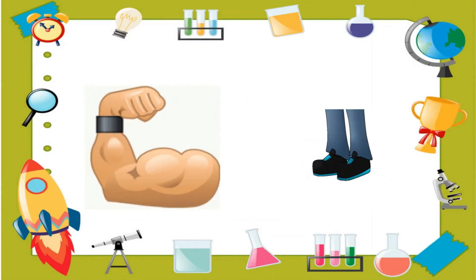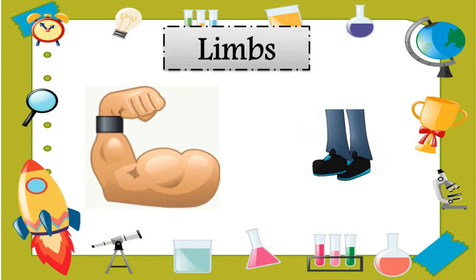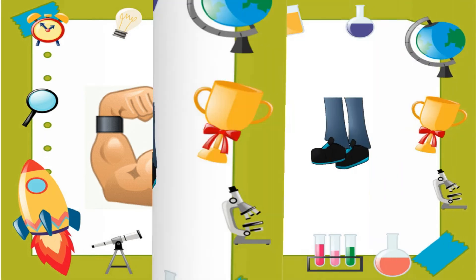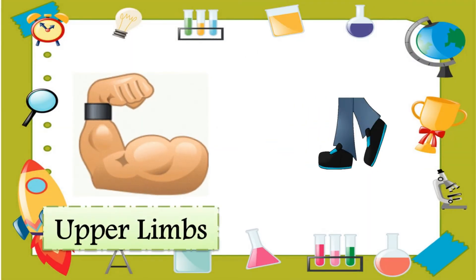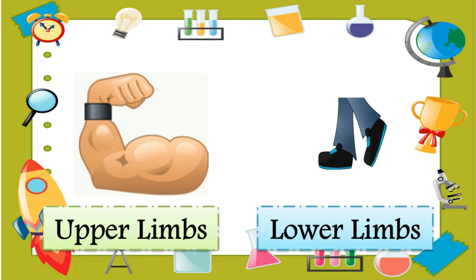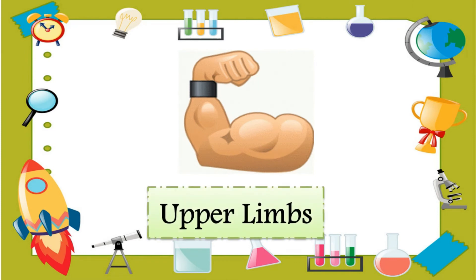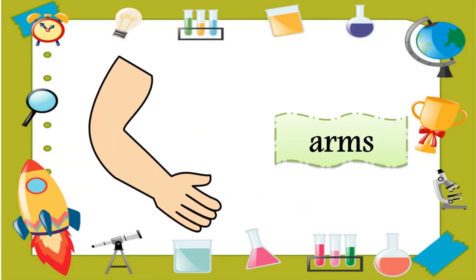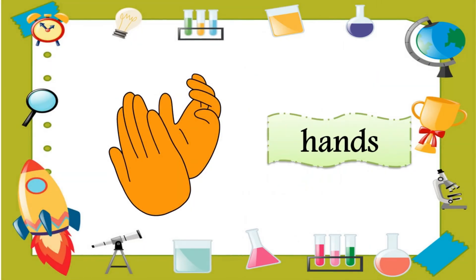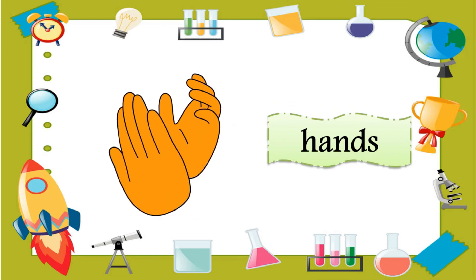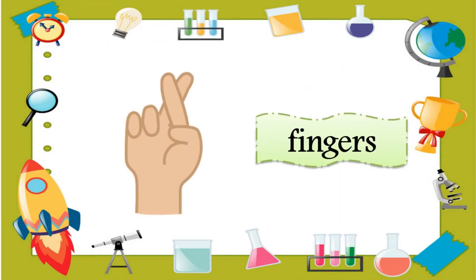The third main part of the body is the limbs. Limbs are divided into two parts: the upper limbs and lower limbs. Here are the parts of the body that are included in the upper limbs: arms, hands, and fingers.